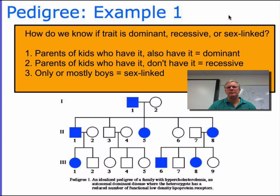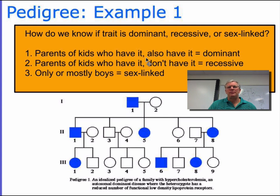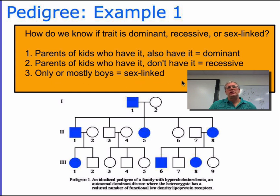So let's look at an example. Here's a pedigree. How do we determine whether the trait is dominant, recessive, or sex-linked? Well, let's look at these three keys. First, if the parents of the kids have the disorder as well, then the gene is probably dominant. If the parents don't have it, then it's most likely going to be a recessive disorder. And if it looks like it's mostly boys, then there's a good chance that it's sex-linked.